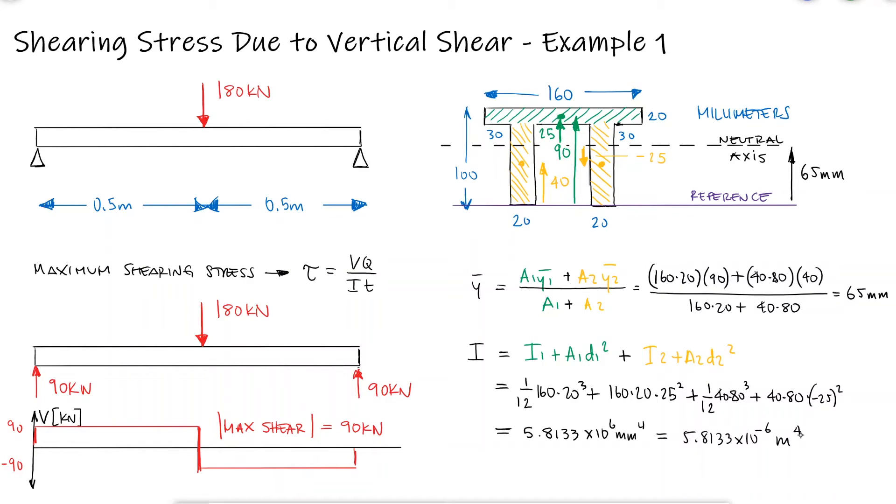The maximum value of Q will occur when calculating the shearing stress at the neutral axis. Since t at that point has the lowest value we'll find for any y value, we know that the maximum shearing stress will occur at the neutral axis.